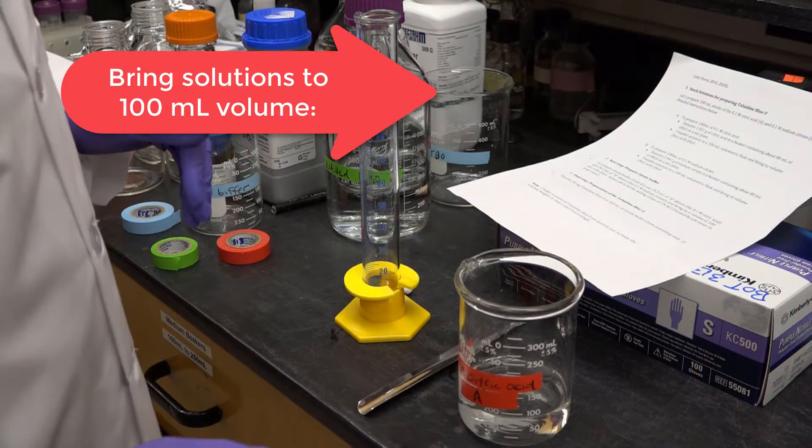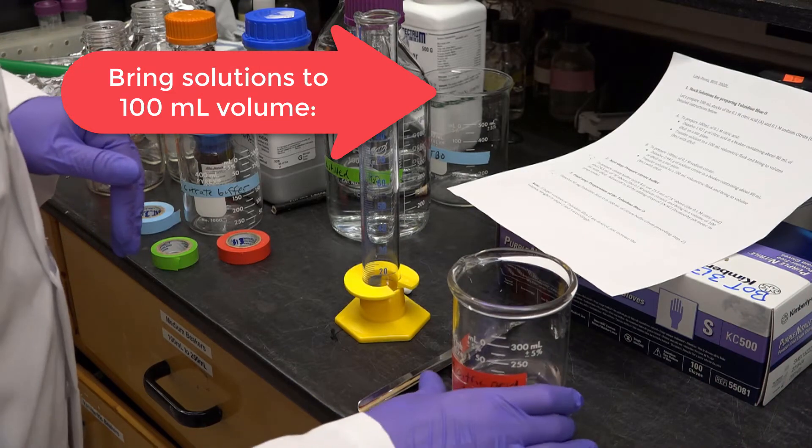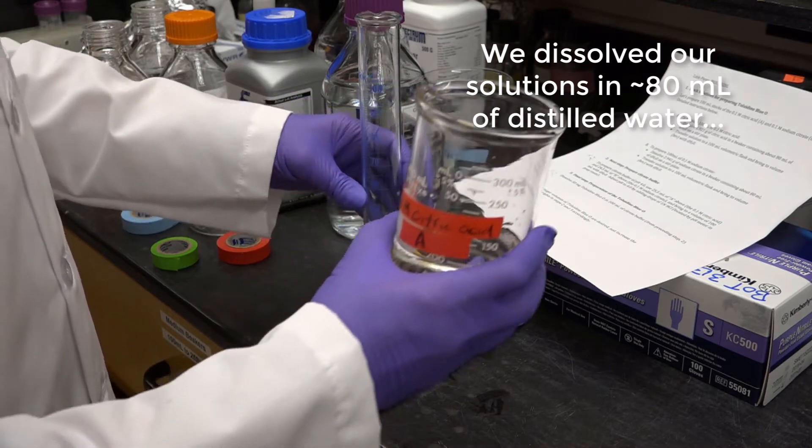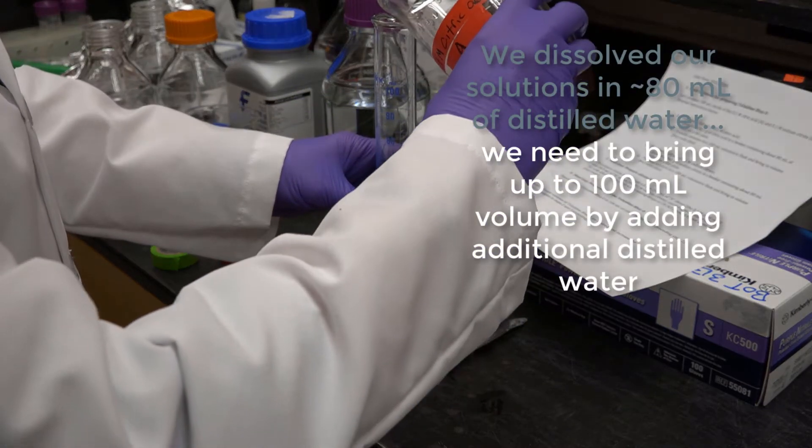Okay, so I need 100 mils of the citric acid solution, and I've dissolved it in 80. So what I'm going to do is I'm going to put this in a graduated cylinder.